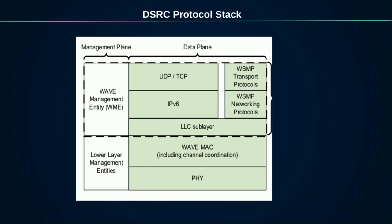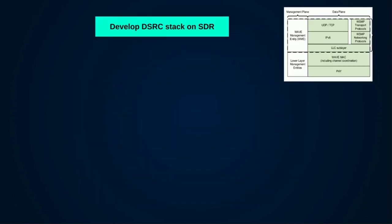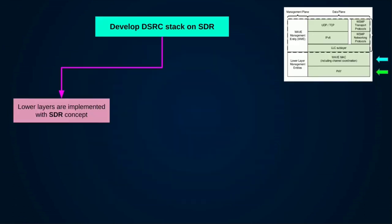This shows the DSRC protocol stack. Layers with blue arrows show the Physical and MAC layers, which are at the hardware level. Layers with pink arrows show the Logical Link layer, WSMP layer, and WME layer, which are at the software level. We are using the SDR concept to implement the layers at the hardware level.